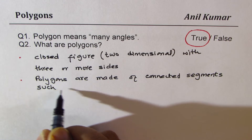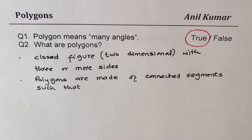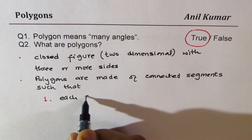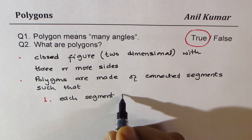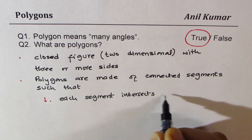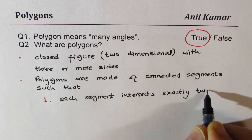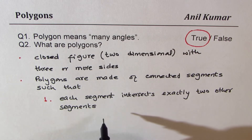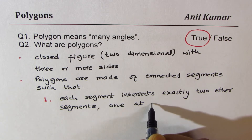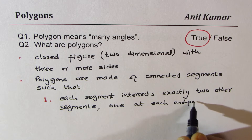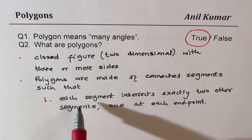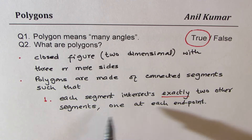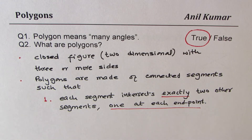Such that they have two properties. Property one: each segment intersects exactly two other segments, one at each endpoint. So each segment intersects exactly two other segments, one at each end.